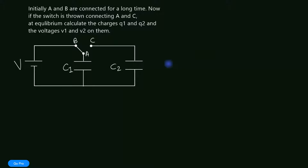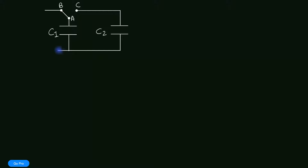So let's solve this. Since we are now interested in the case from A to C, I'm going to copy the relevant part of this circuit. This is the situation right now: C1 is completely charged and the voltage on C1 must be equal to V.